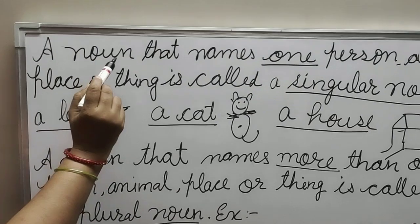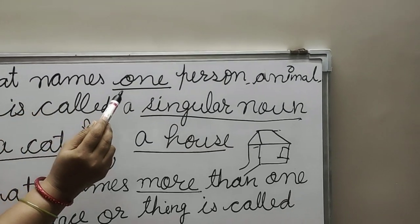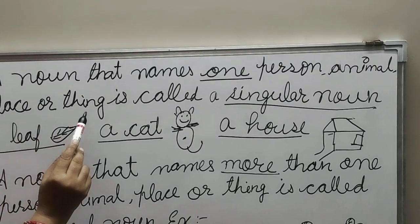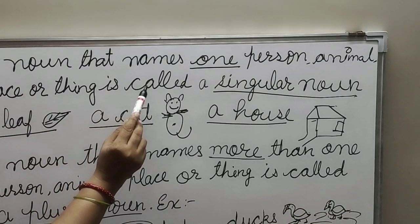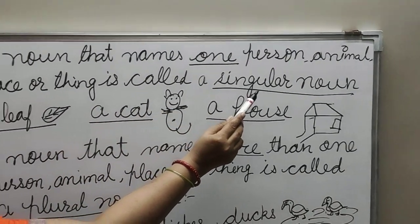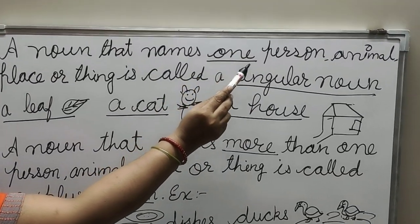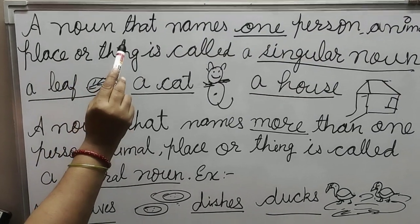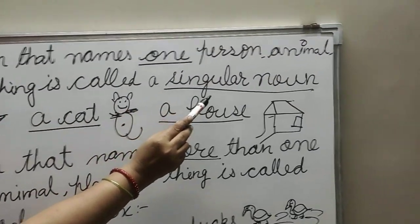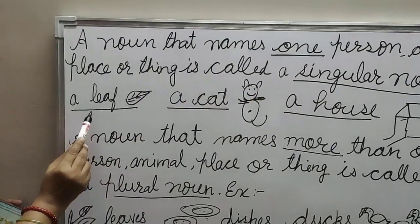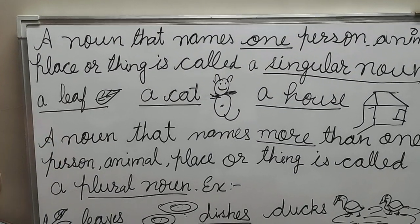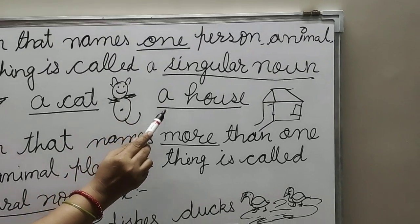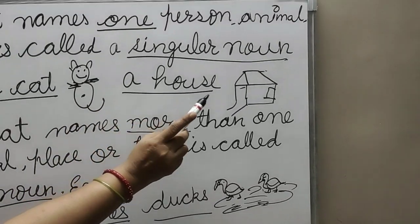A noun that means one person, animal, place or thing is called a singular noun. When we say about one person, one animal, one place or one thing, it is called a singular noun. For example, a cat means one cat. A house means only one house.